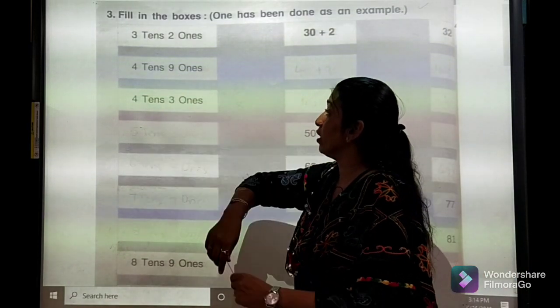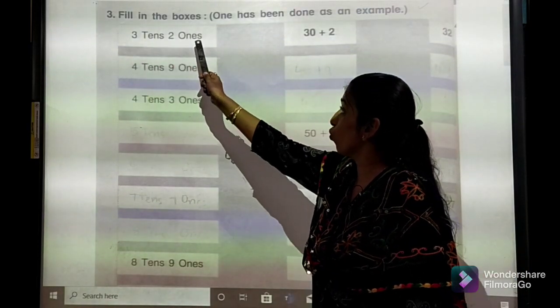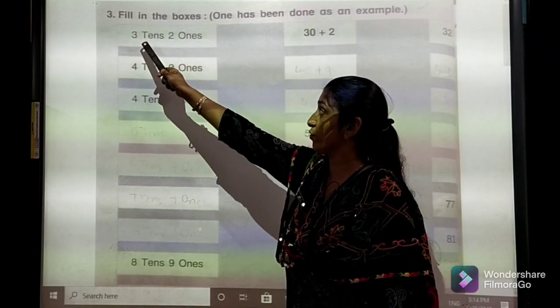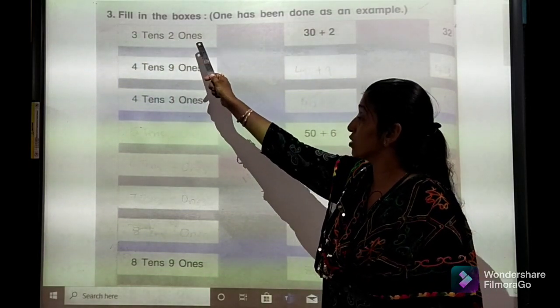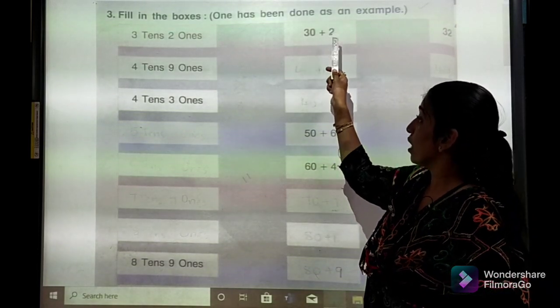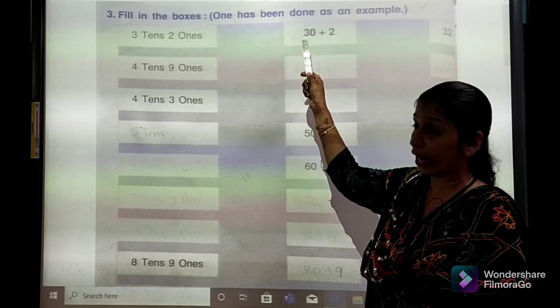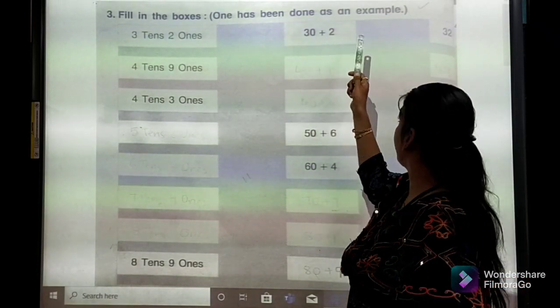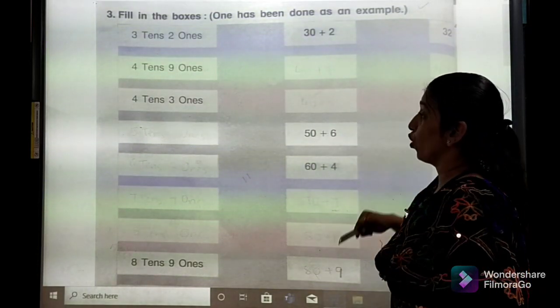Here is an example given. 3 tens, 2 ones. 3 is the case of 10, and 2 is the case of 1s. So 2 to be written, because it is the case of 1s. And 3 tens have to go 30. So 30 plus 2 will be 32.